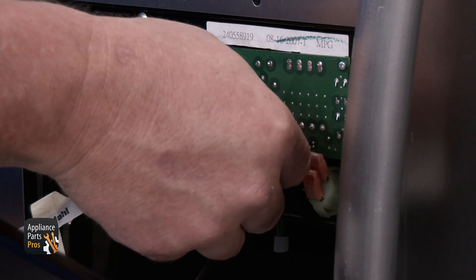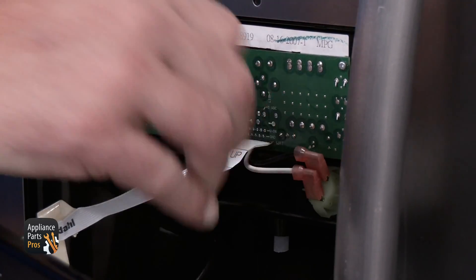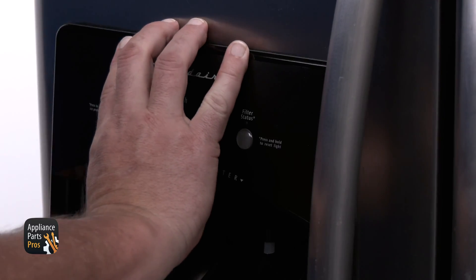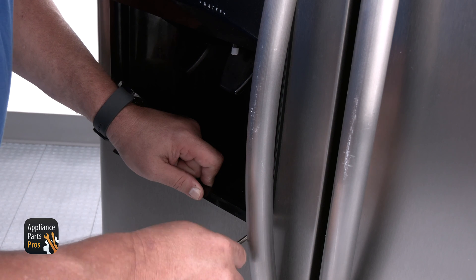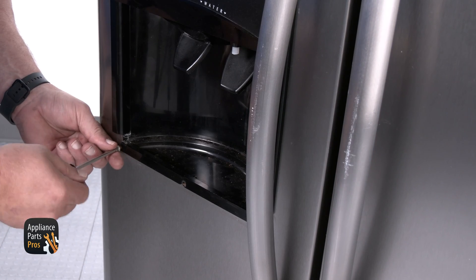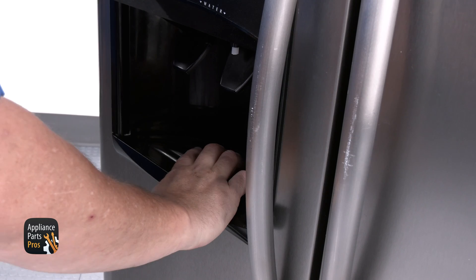Now we can reconnect the wiring from the switchboard back into the control board and put the dispenser cover back in place. Install the screws that hold the panel in place. Don't forget to slide the drip tray back in.